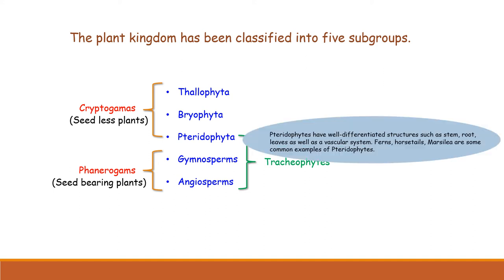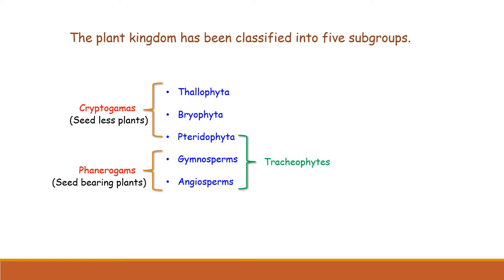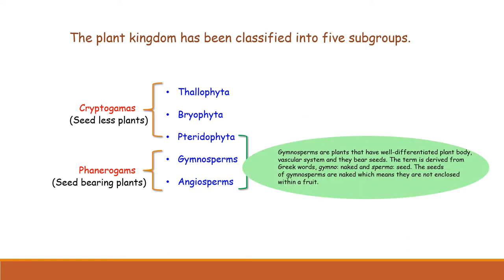The third group is Pteridophyta. Pteridophytes have a well-defined vascular system — unlike bryophytes and thallophytes. Examples in this group include ferns, horsetails, and Marsilea.